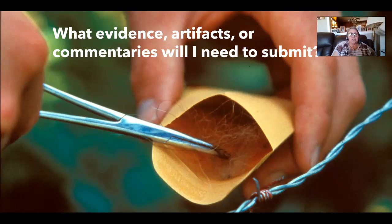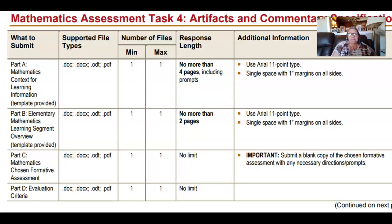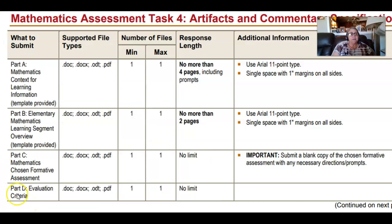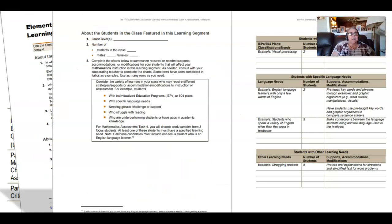The evidence chart is really your to-do list — the things you've got to turn in for your edTPA. It's a very important part found in the back of your handbook. If you haven't looked at it, you need to. If I were doing the edTPA, I'd print it off and have it on my desk. First, you'll complete a mathematics context for learning using a provided template, just like the context for learning you did for Task 1.